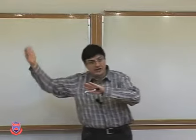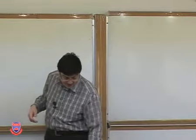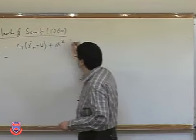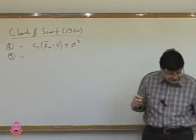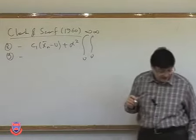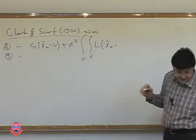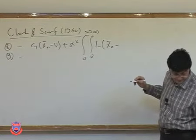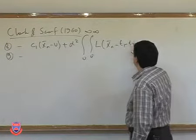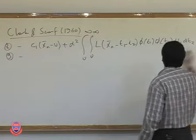We number installations in terms of closeness to the demand point. If the optimal is applied, the solution for the specific lead time we mentioned last time is two integrals from 0 to infinity of L(x_n_bar − t1 − t2) · φ(t1) · φ(t2) dt1 dt2.